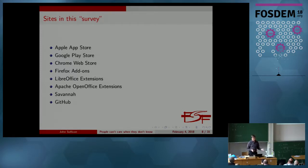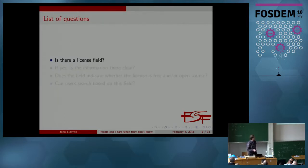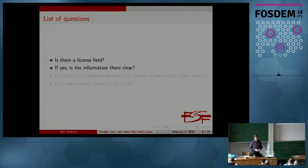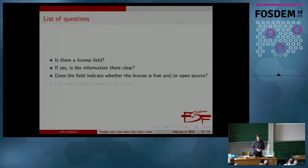As we look at these things, I'm going to focus on a list of questions for each of these sites. When you're looking at an entry for a program on that site: Is there a license field at all? Does it say what license the program is under? If it does, is the information clear? Does it seem to be accurate? Does the field indicate whether the license is a free license or an open source license? And can users search for programs that fall under any particular licenses?